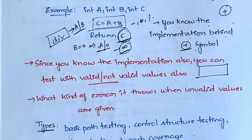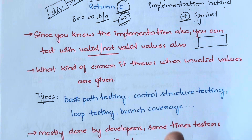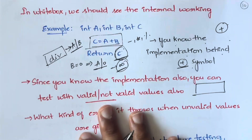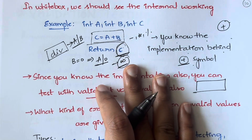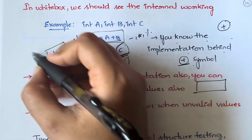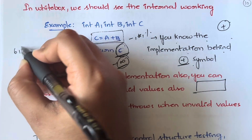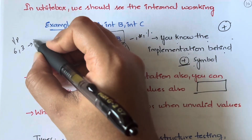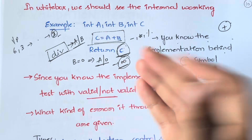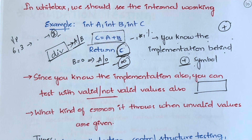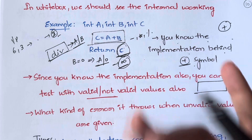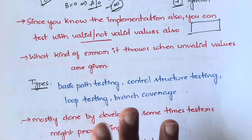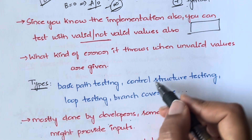In arithmetic operations there are many scenarios where you can get undefined values, and all those situations can really be tested only if you know the implementation. In black box testing, someone might just give you 6 divided by 3, you click division, get 2, and the test passes — but it won't cover all scenarios. That's what you can identify in white box testing.